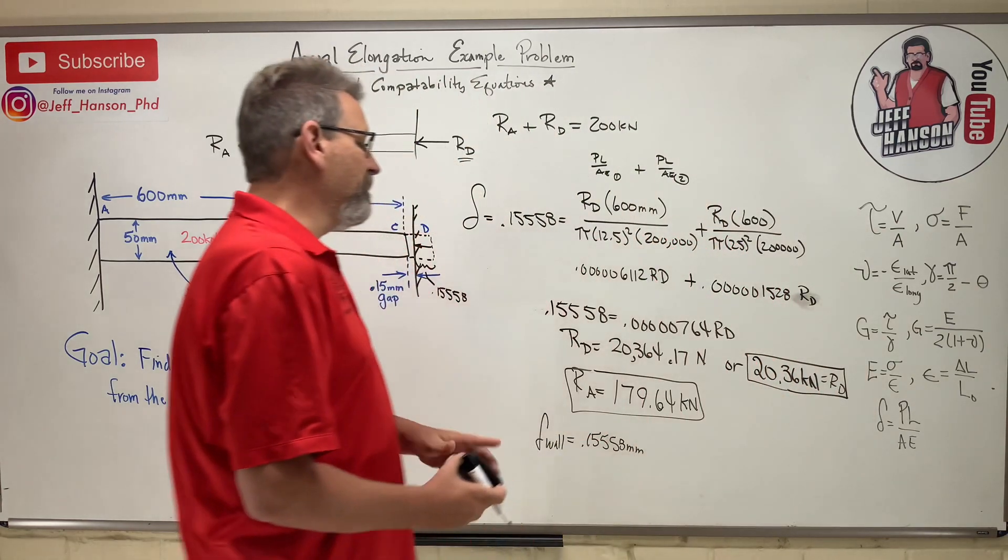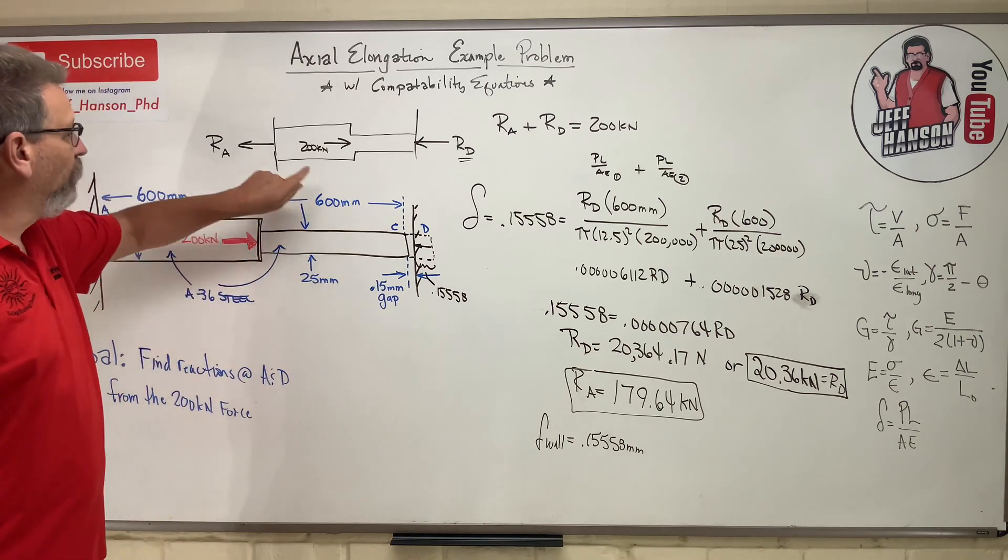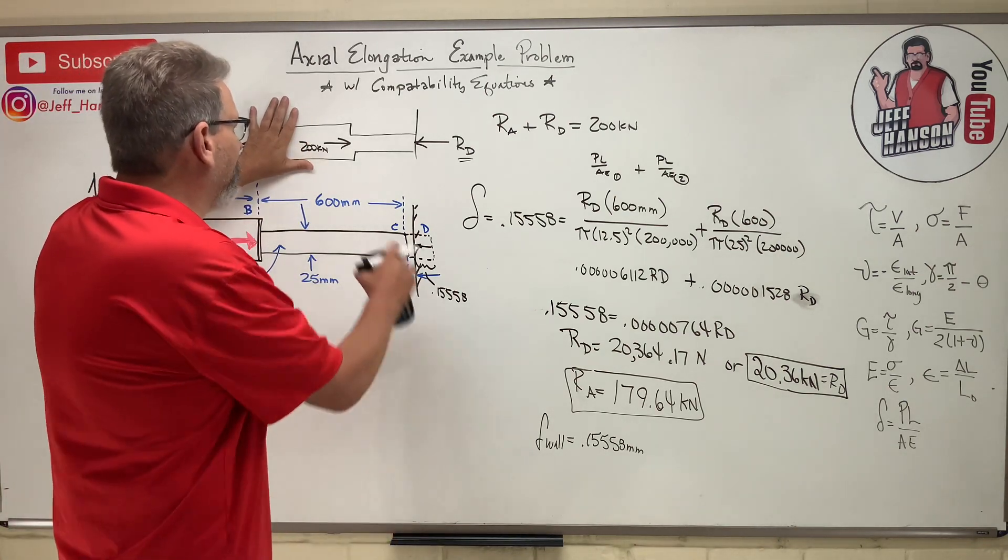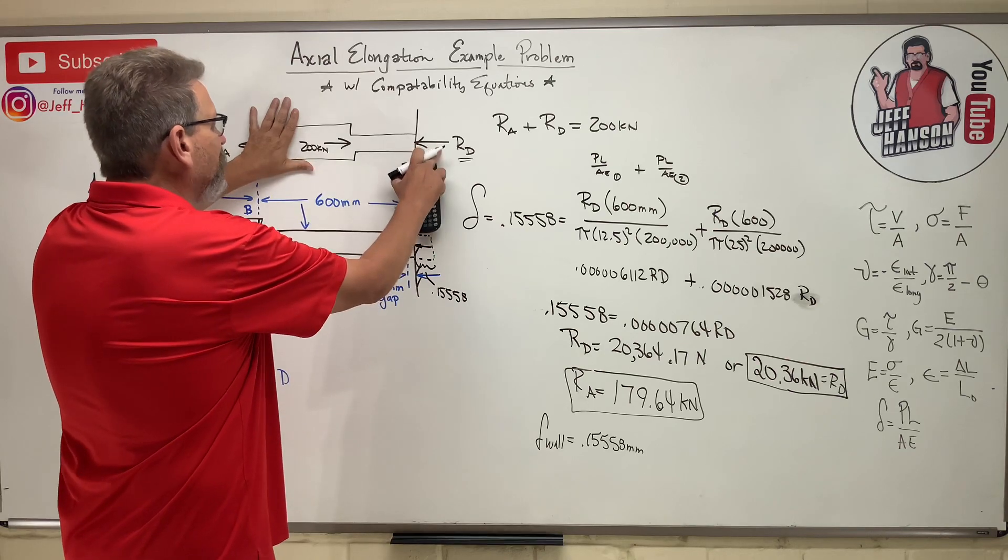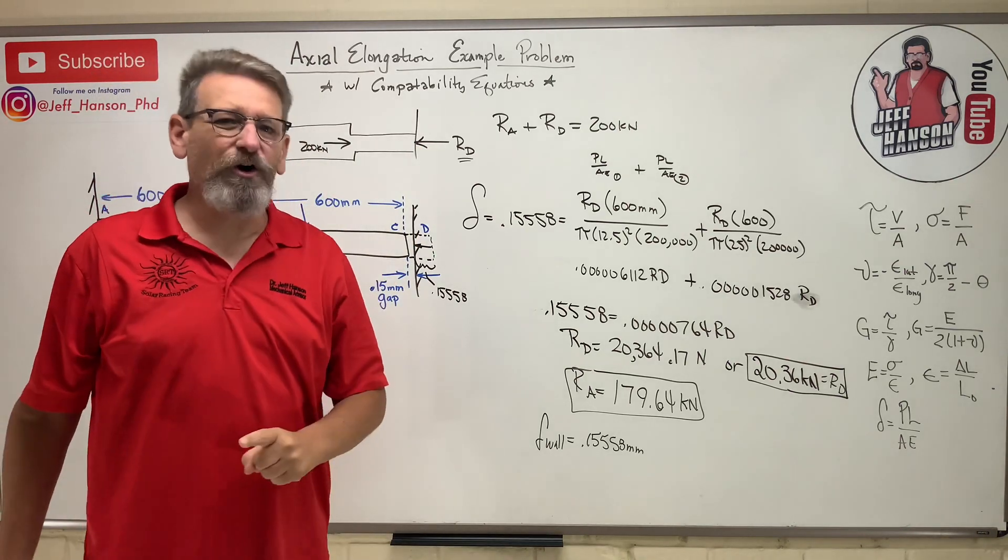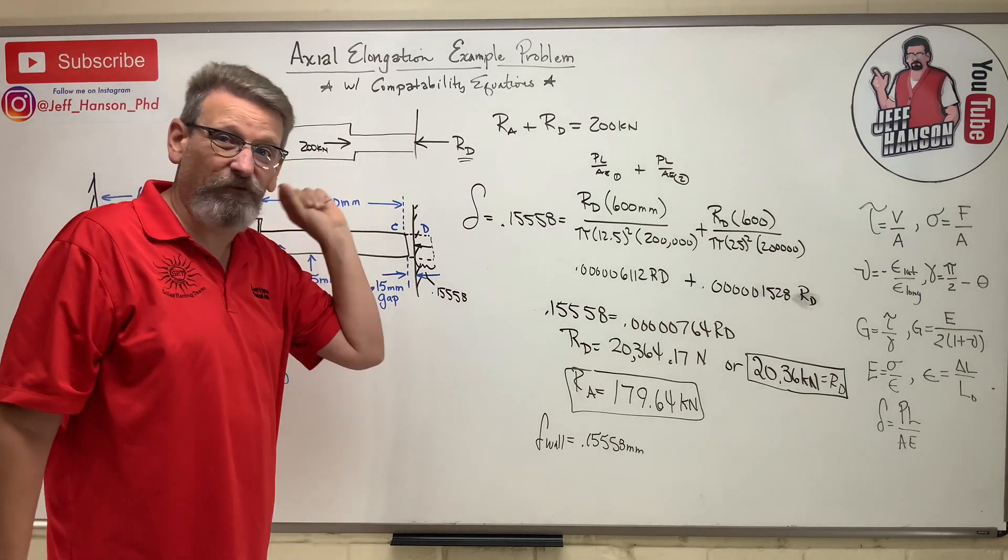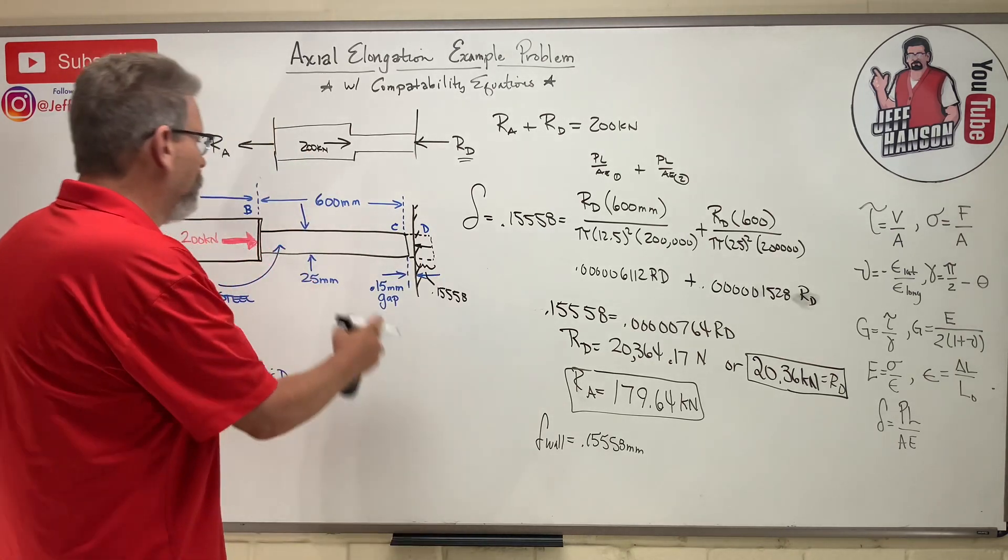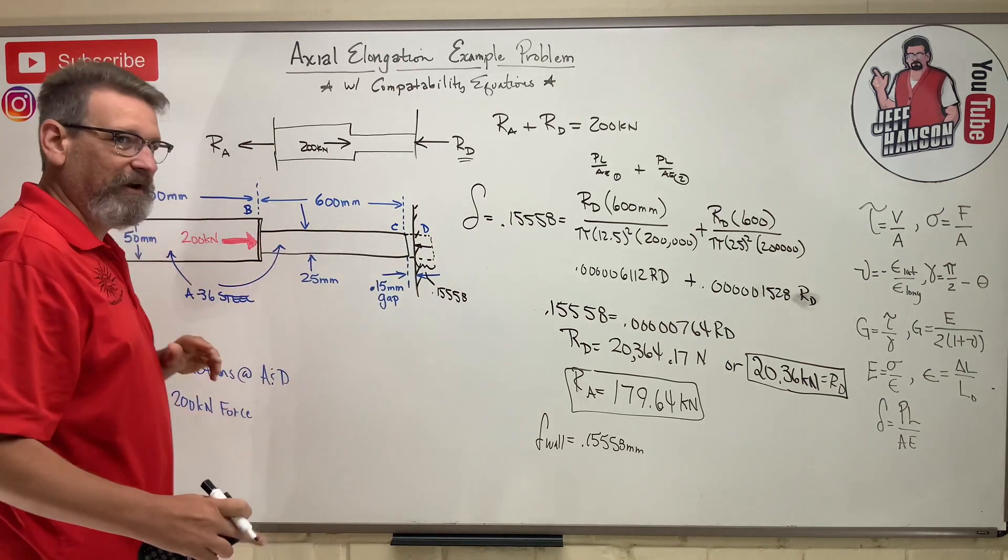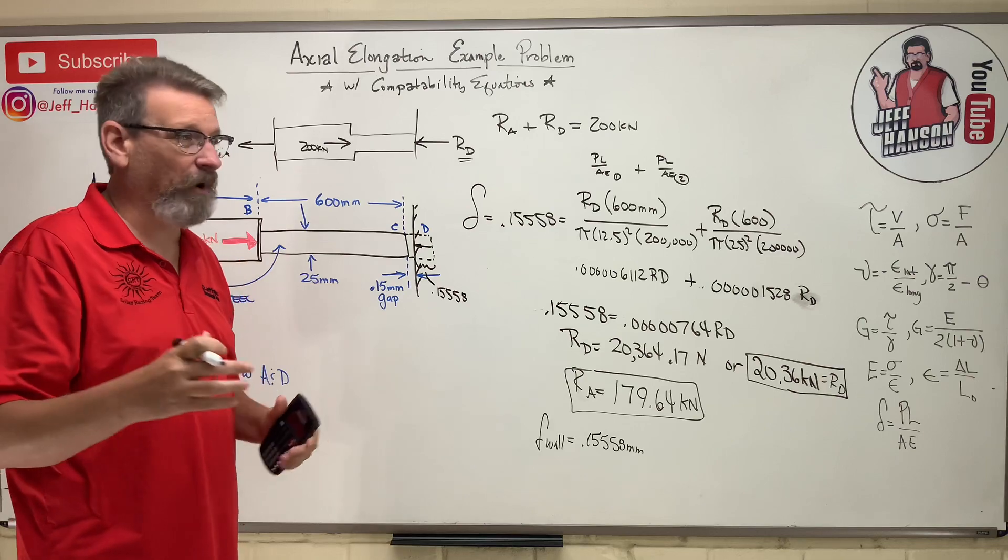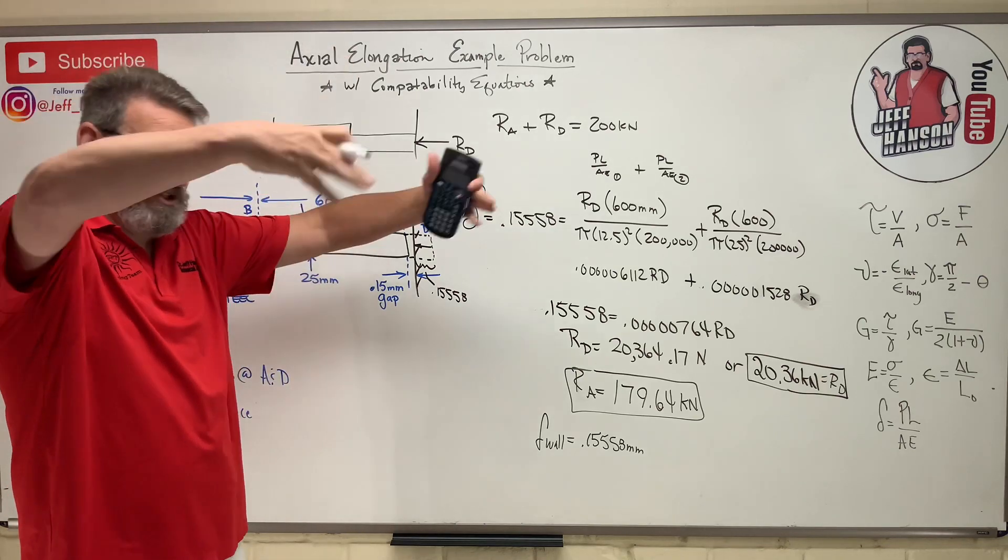So probably the most common mistake I see is, what is the force in this section here? And they would cover this up and they would say, oh, it's Rd minus 200. Well, it's not Rd minus 200 because we've already taken into account the amount of stretching that the 200 is doing in that first step, right?